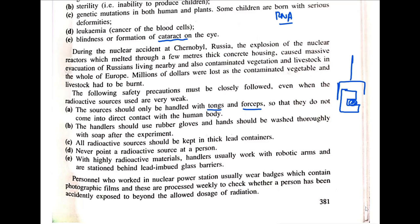Recently, instead of coming directly into contact with radioactive elements, robots are used for that purpose. Using a joystick or computer program, a robot can be programmed to replicate whatever the operator is trying to do — picking up material like a crane system and placing it exactly where needed. Moving large uranium fuel cells into a nuclear reactor and removing old ones is also done by robotic equipment. Handlers should wear rubber gloves, and hands should be washed thoroughly with soap after the experiment.